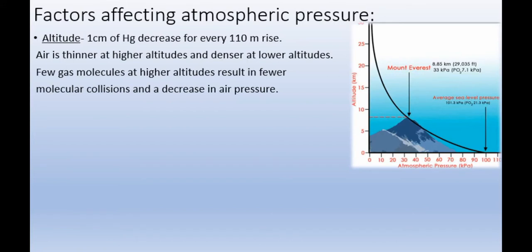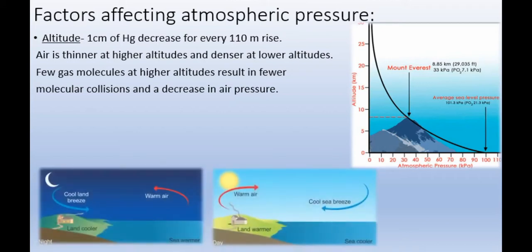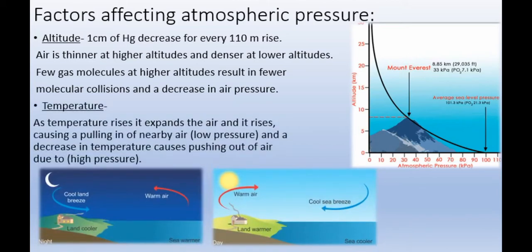Pressure measured in centimeters of mercury decreases for every 110 meter rise. Air is thinner at higher altitudes and denser at lower altitudes. Fewer gas molecules at higher altitudes results in fewer molecular collisions and a decrease in air pressure. Near the earth's surface, air molecules are tightly packed, while at higher altitudes molecules are more spaced out.